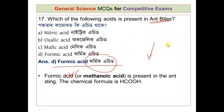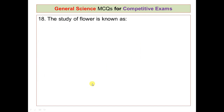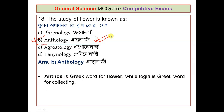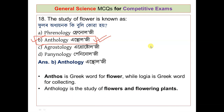Question number 18: the study of flowers is known as what? The options are phrenology, anthology, agrostology, and palynology. The correct answer is anthology. Anthology is a Greek word — 'anthos' means flower and 'logia' means the study of collecting. Anthology is the study of flowers and flowering plants.